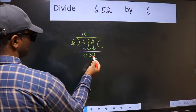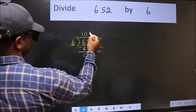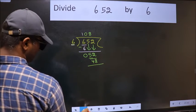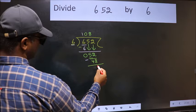So 52. A number close to 52 in the 6 table is 6 times 8, 48. Now we should subtract. We get 4.